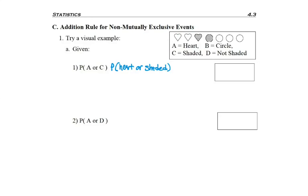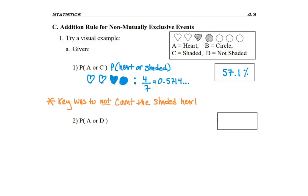So taking all my marks off, we would be counting the first three hearts and the fourth shape because it's shaded. So we would have four of our seven shapes to give us 57.1%. Here the key was that we did not count the shaded heart twice.